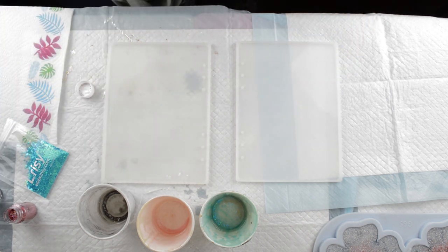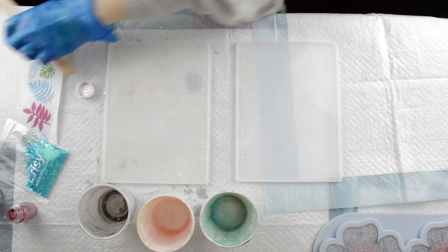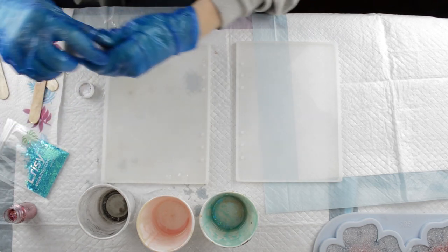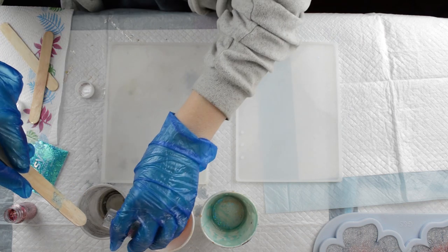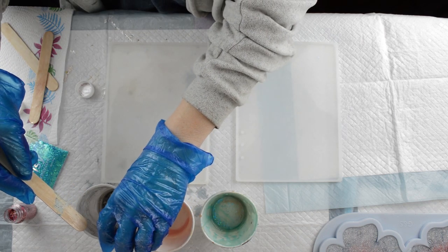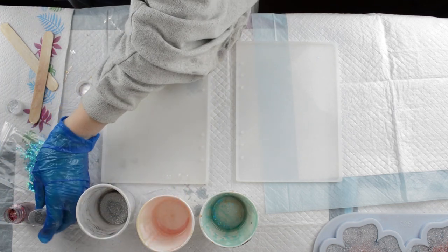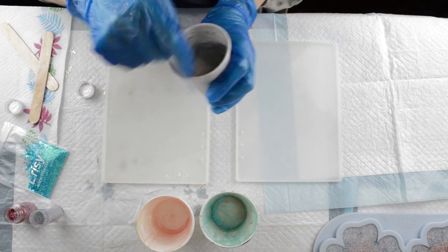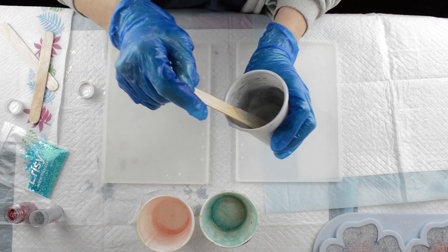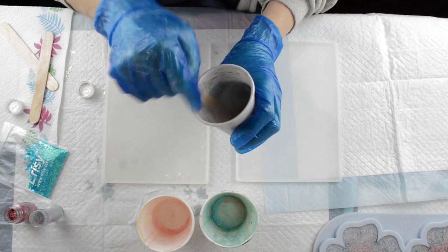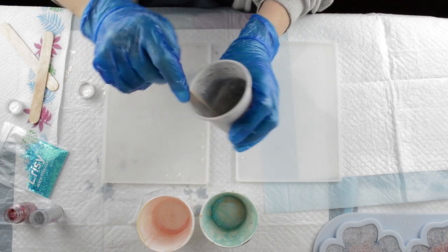I just need to get some more stirring sticks. Just let me grab some more. I'm going to add the Hemway to the first one, silver holographic glitter. I know it looks darker in the cup, but that's because I like to reuse the cups. So it's got some darker dried resin, which is the same for all of my cups actually that I'm using today.